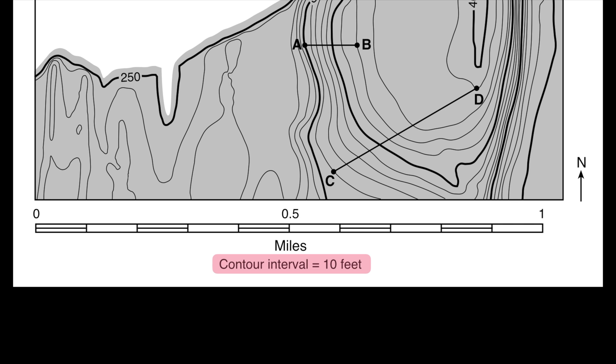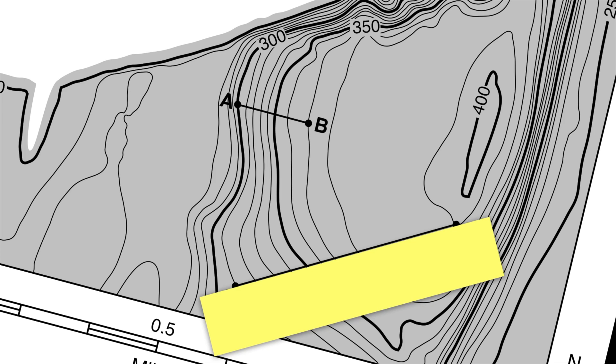So let's begin constructing our profile. The best way to do this is with a piece of scrap paper, which you should line up along the line that you're profiling, in this case CD. The first thing I'm going to do is transfer some marks to my scrap paper where C is and where D is.